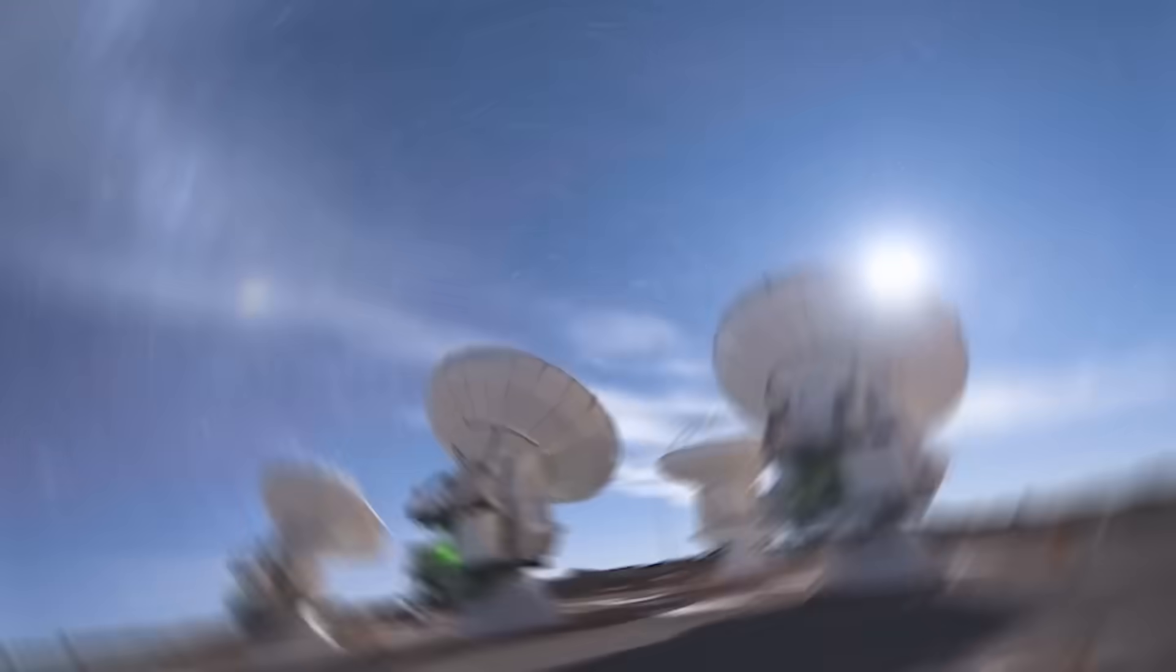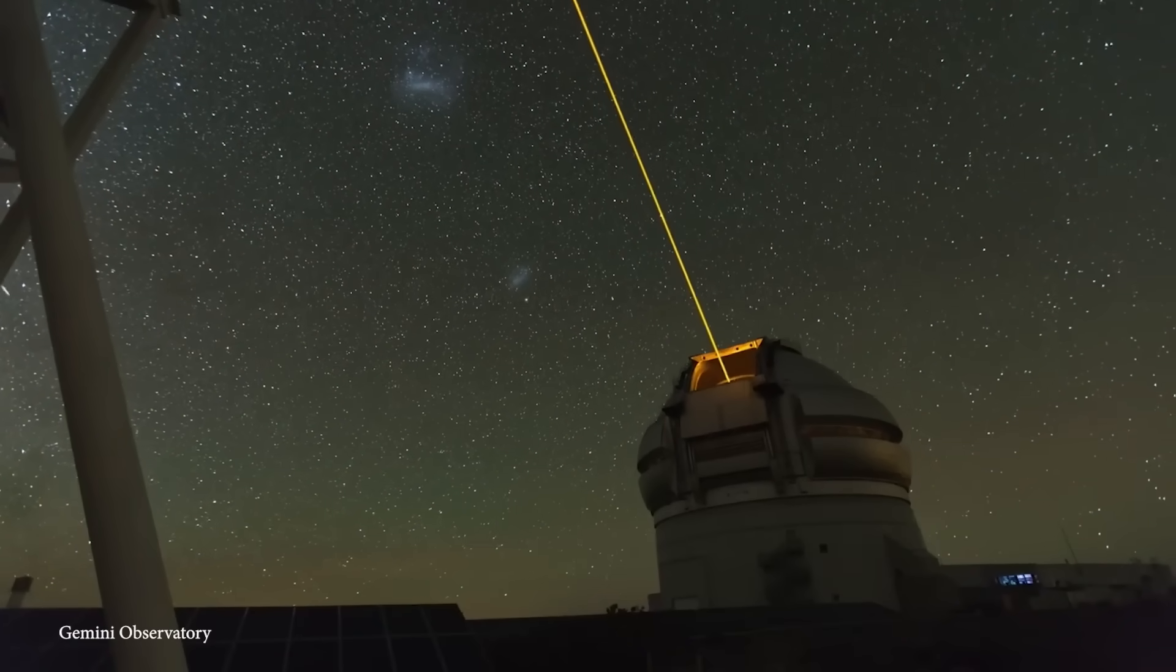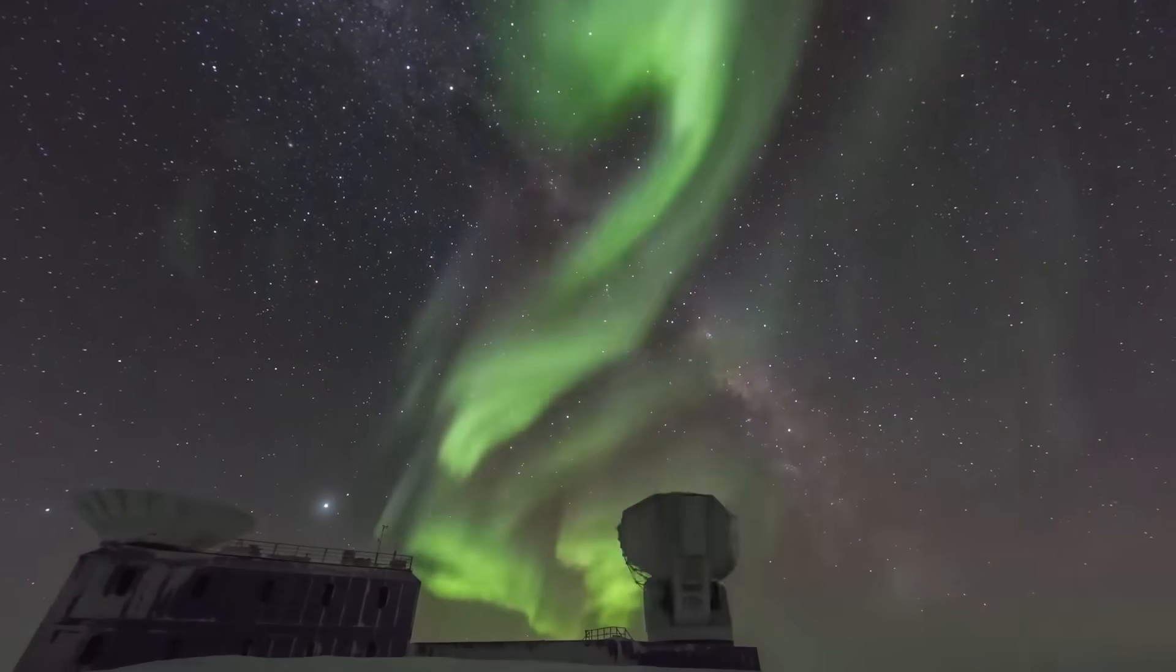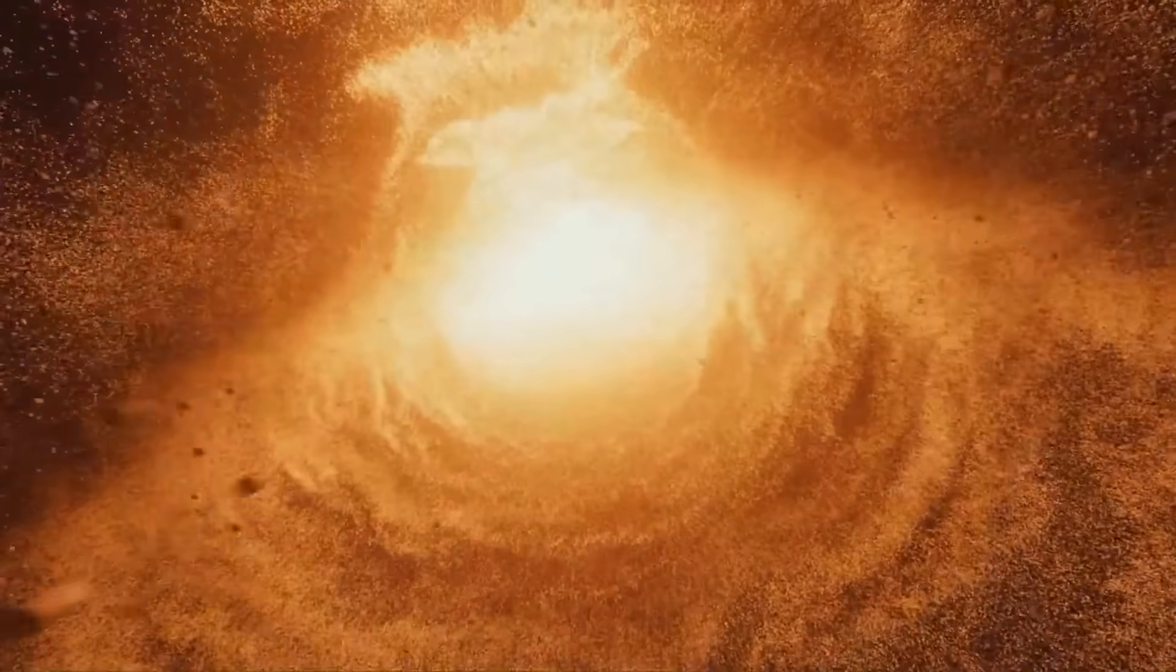For the first time in history, the International Asteroid Warning Network, a United Nations-endorsed Global Defense Coalition, has begun tracking an object from another star system. But why now? Why this one?